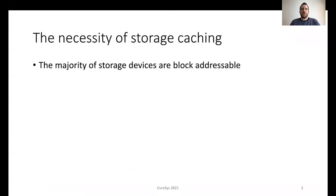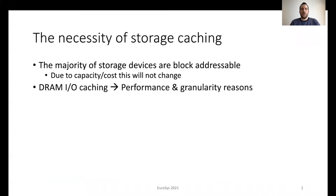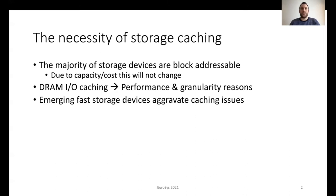Today, the majority of storage devices are block addressable. These include traditional hard disk drives but also fast storage devices like flash. This will not change anytime soon due to capacity and cost reasons. Block addressable storage devices require I/O caching over DRAM for several reasons. These include performance, because DRAM is much faster compared to persistent storage, and also granularity, as applications tend to access data at a finer rather than block granularity.